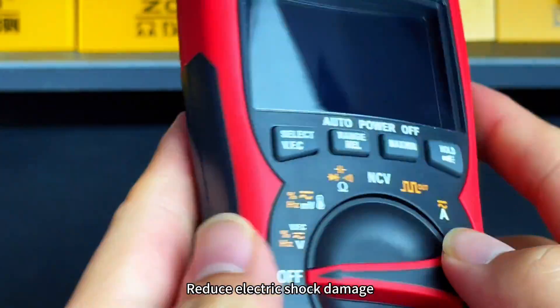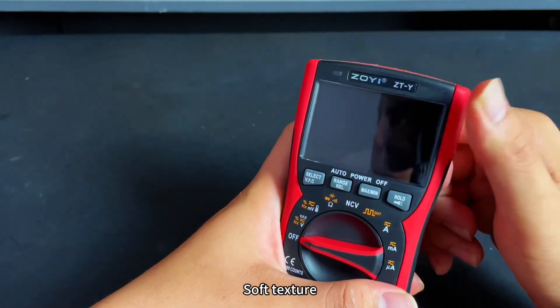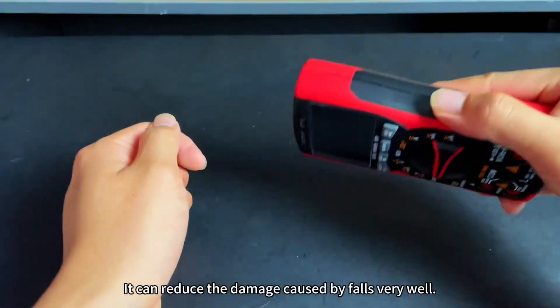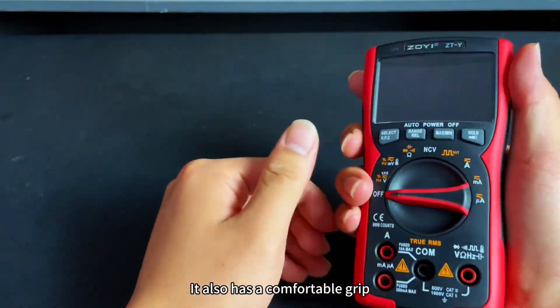This reduces electric shock damage. The red part is TPE material with a soft texture. It can reduce the damage caused by falls very well and also has a comfortable grip.